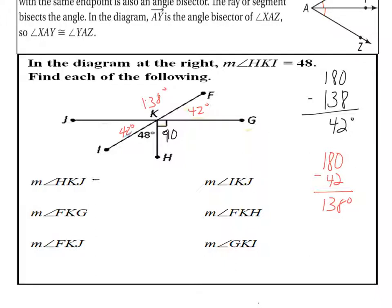Angle HKJ. H to K to J. We're going to be using a little bit of the angle addition postulate here. HKJ. I'm going to take these two angles and add them together. That's 42 and 48. Well, that happens to be 90 degrees. Okay, 42 plus 48.